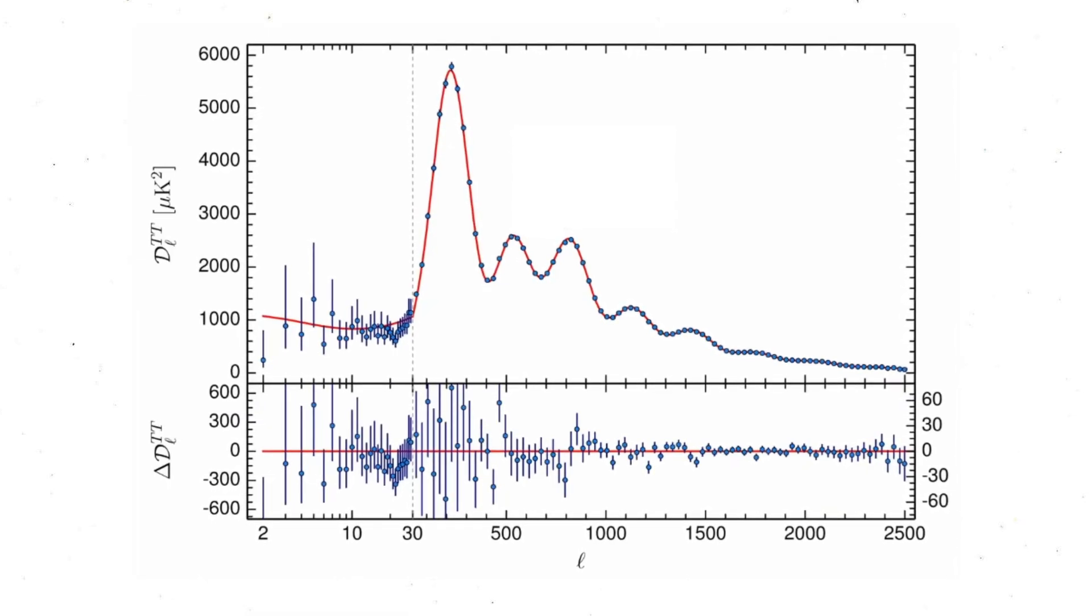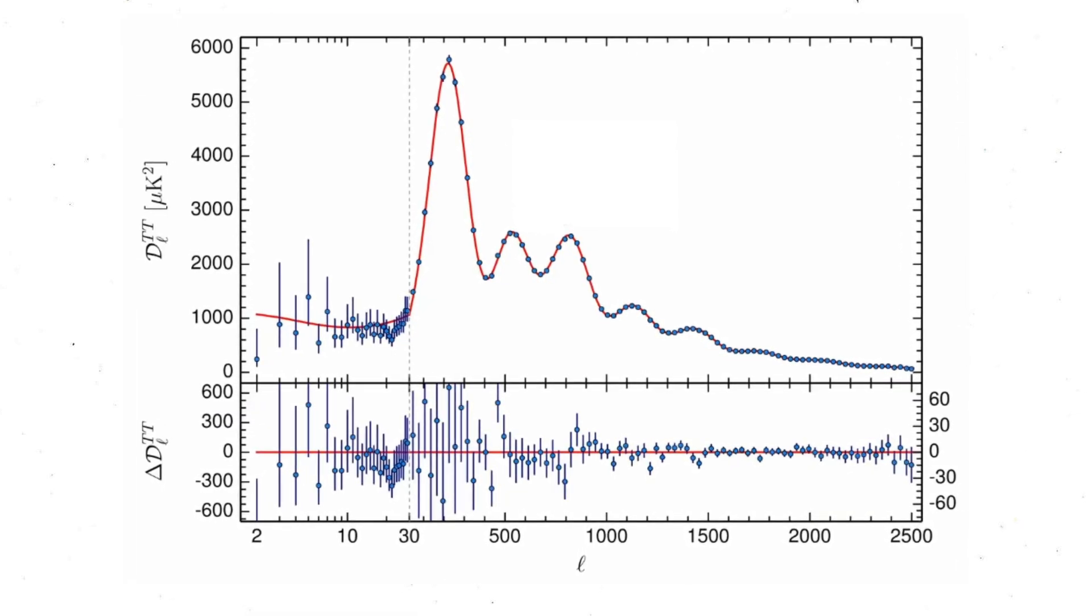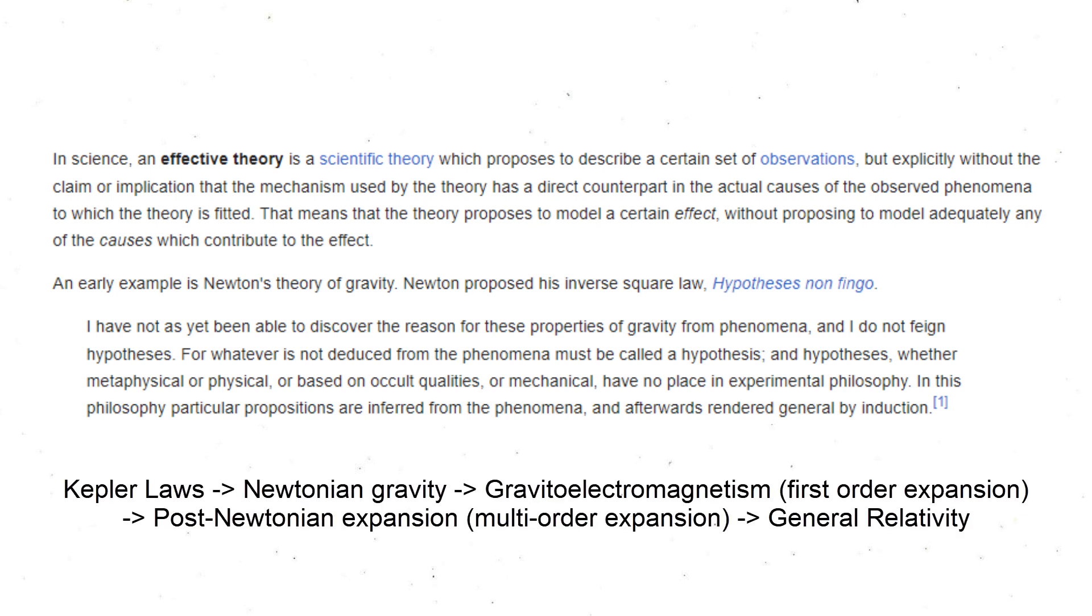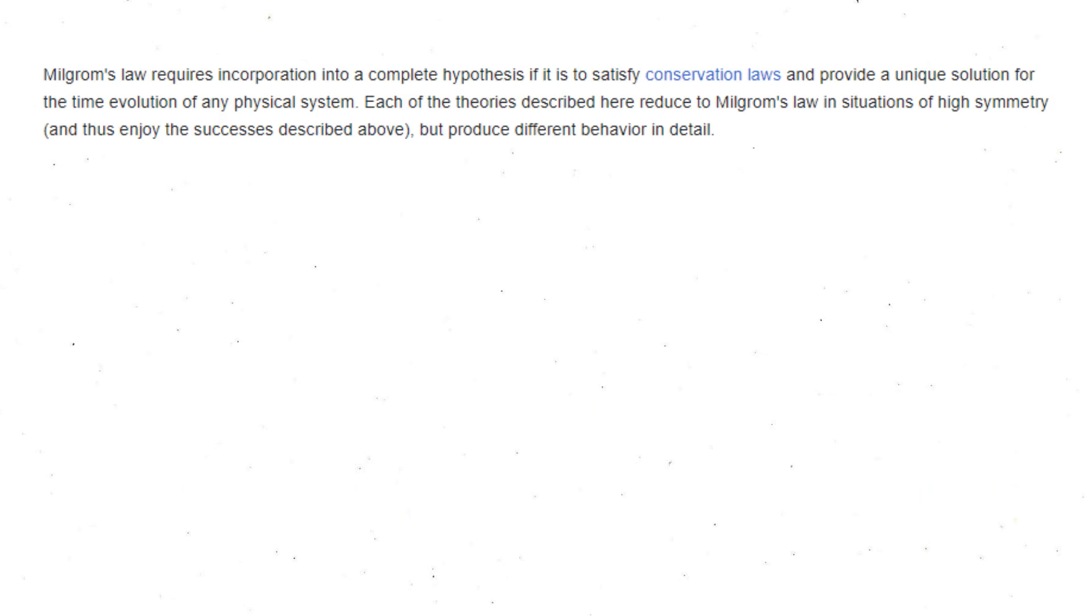Firstly, one must understand MOND as an effective theory, the same way Newtonian gravity or gravitoelectromagnetism or linearized gravity is an effective theory or approximation of general relativity.